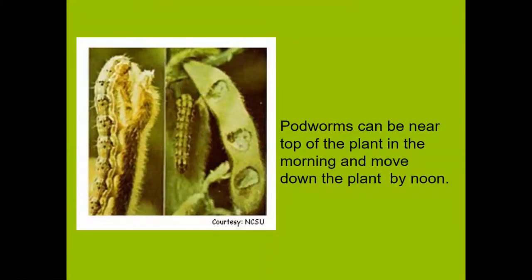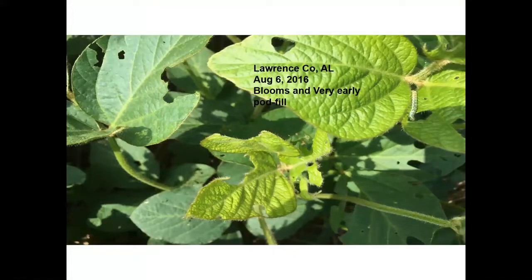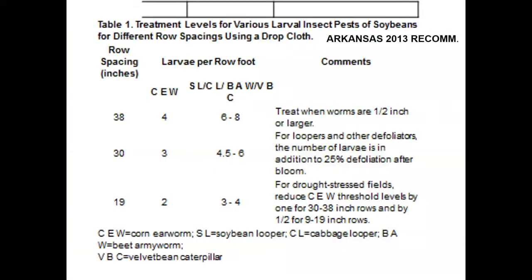Pod worms feed on the beans in the pod. They move up and down the plant — in the morning they'll be up high on the plant, and as temperatures warm up, they'll move down. In August 2016, with plants in the bloom to very early pod fill stage, pod worms were actually feeding on the lush green foliage more so than on the blooms and little pods. Economic thresholds vary from state to state. The threshold in Arkansas on 38-inch rows is four per row foot, and they reduce the threshold in drought stress situations.